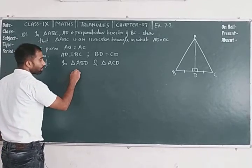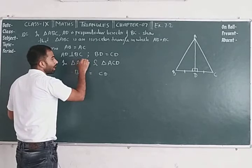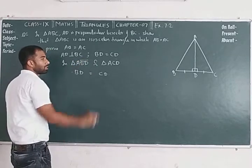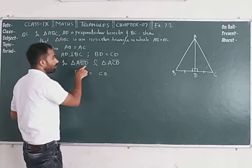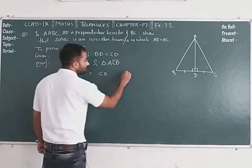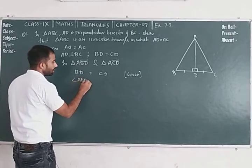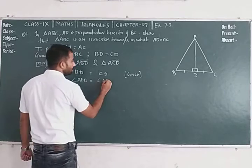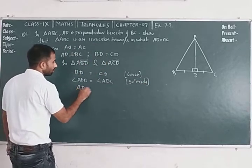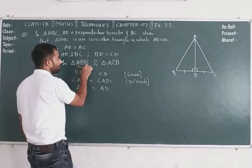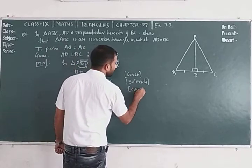What are the things we know? BD is equal to CD — this is given. Also keep in mind the direction in which you have considered the letters. So angle ADB is equal to angle ADC, which is 90 degrees each, because AD is perpendicular. And AD is equal to AD — common.